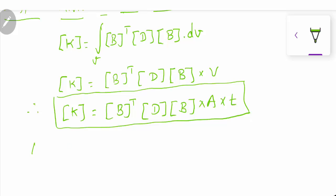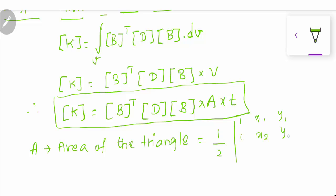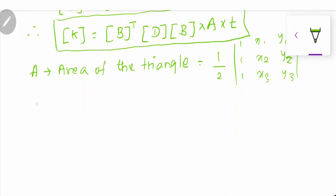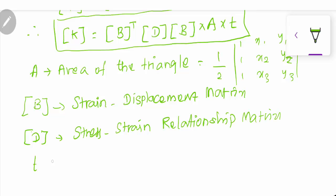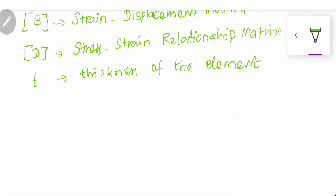The area of the triangle is: A = (1/2)|det[1, x1, y1; 1, x2, y2; 1, x3, y3]|. Thickness t is the thickness of the element. B is the strain displacement matrix; Bᵀ is its transpose. D is the stress-strain relationship matrix.